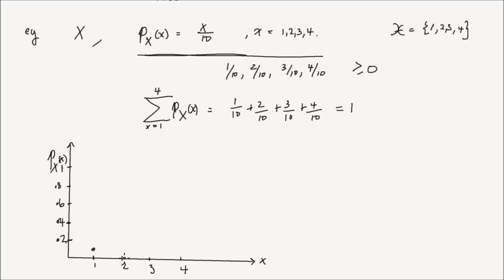When x equals 2, the PMF is 2 over 10, or 0.2. When x equals 3, the PMF is 3 over 10, or 0.3. When x equals 4, that is going to be equal to 0.4. So that's the plot of the PMF.